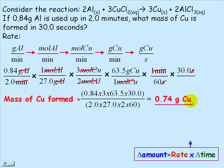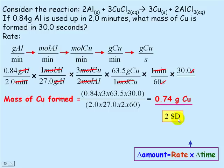Now for significant digits: 0.84 has 3, the mole ratio gives 2, and 30.0 has 3 significant digits. 60, 3, and 2 are whole numbers and not counted. The smallest number of significant digits is 2, so our answer is expressed to 2 significant digits: 0.74 grams of copper is the final answer.